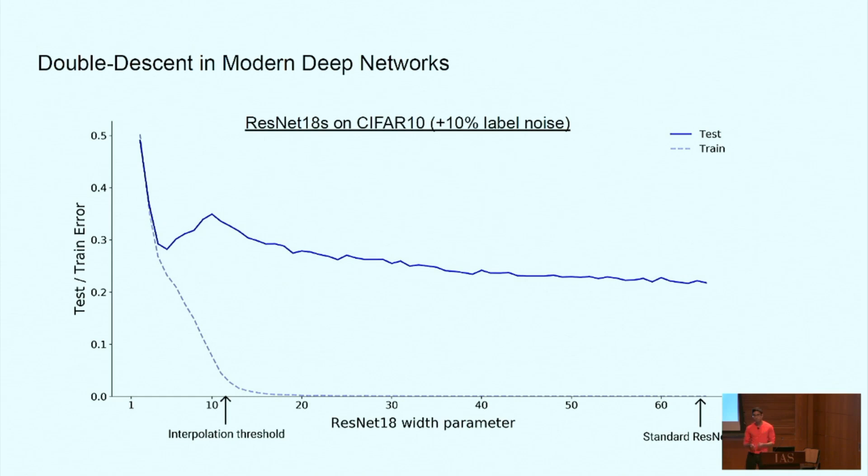For example, if we take ResNet 18 and vary the model size on the x-axis by scaling up the number of convolutional channels in each layer. Now let's take all these networks and train them on CIFAR-10 with 10 percent added label noise and plot the test error of the resulting classifiers as the solid blue line. We see it undergoes double descent over increasing model size. Moreover, the peak of test error occurs right around the interpolation threshold which is right when these models become big enough to just barely fit the train set.